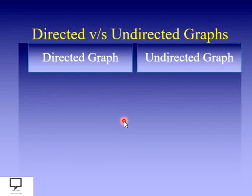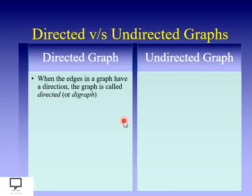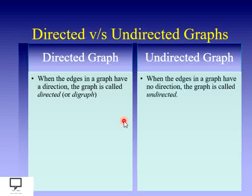Here I am giving you the difference between directed graph and undirected graph. A directed graph is when the edges which are connected in a graph have a direction — that is called a directed graph, or it is also called a digraph. The undirected graph, as the name itself suggests, has no specified direction mentioned on the edges which connect two different vertices, two different nodes.